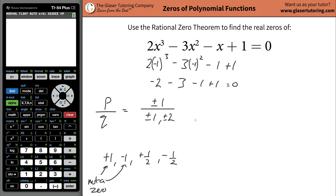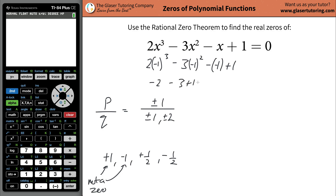That's also not a real zero. So what number are you going to test next? Test the positive one half. Actually, I realized I didn't make it negative in here — but that wouldn't have changed anything. Let me just double check: that would have been negative two, positive three, plus one plus one — again, it still doesn't work. Sorry about that little mistake, but it doesn't work anyway.